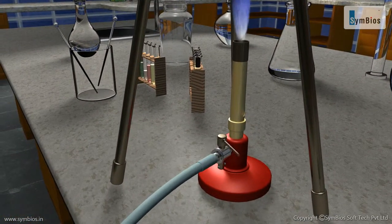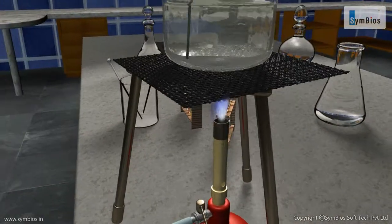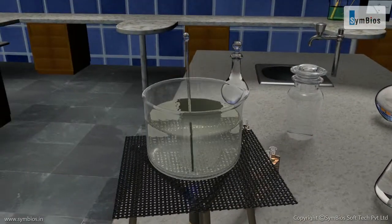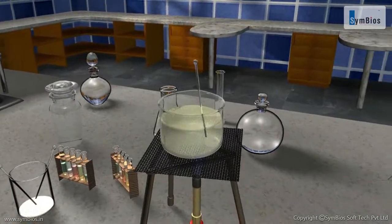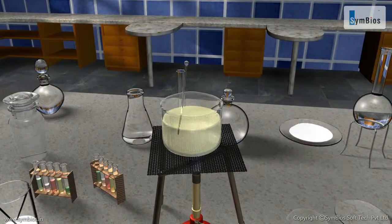Heat the mixture using a Bunsen burner and keep stirring it till a thick paste is formed, and then add a small quantity of salt.